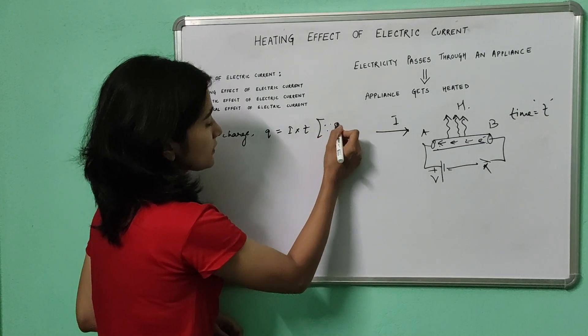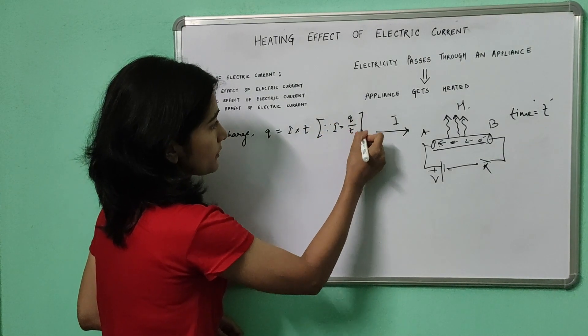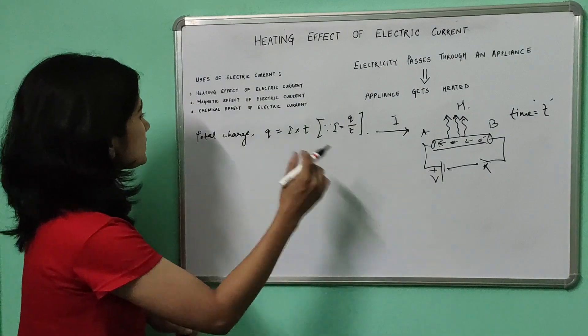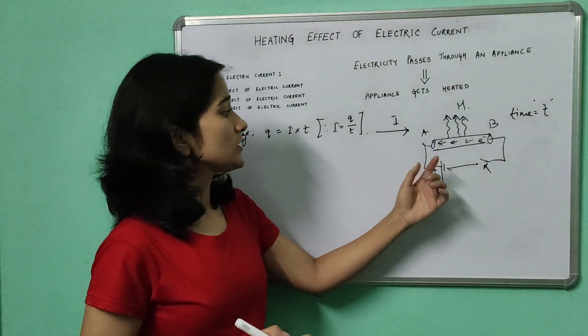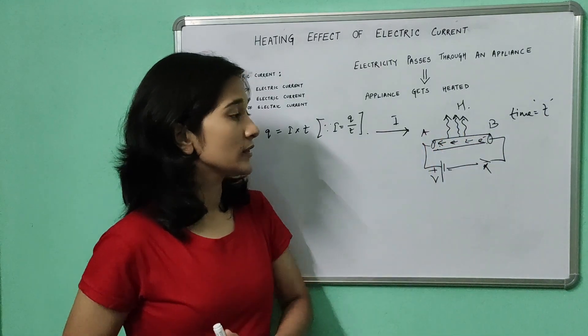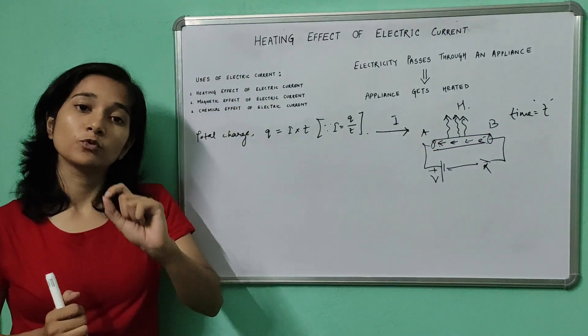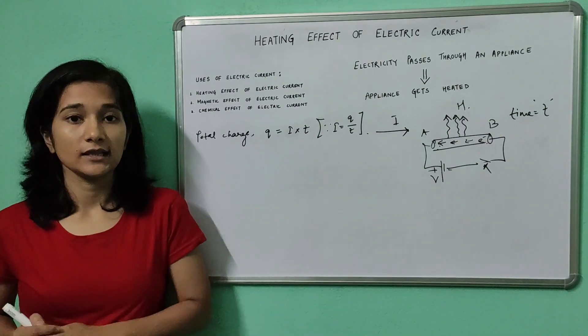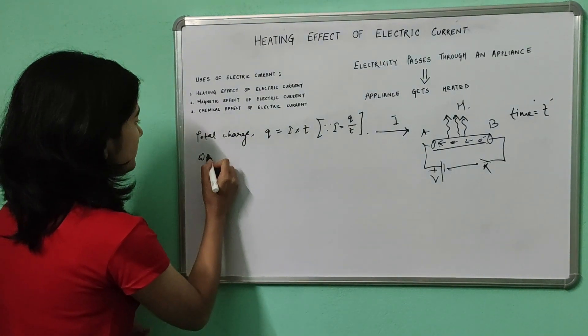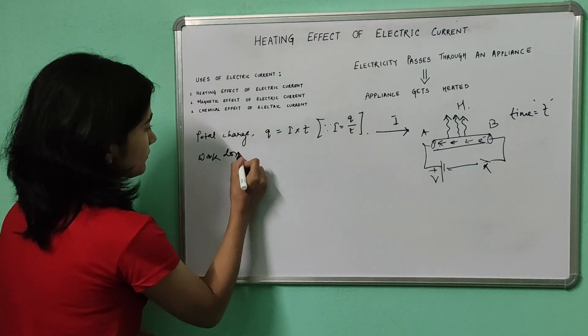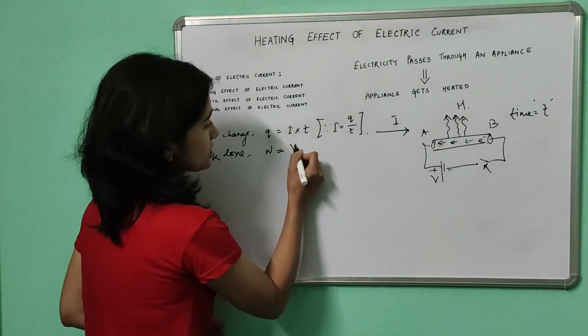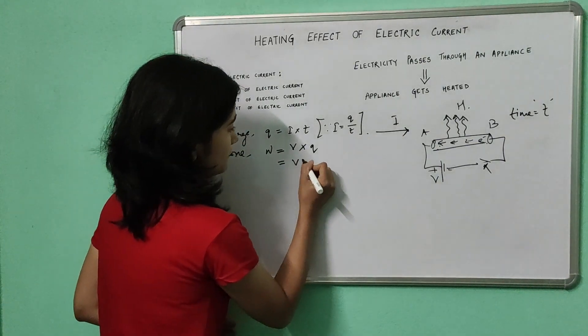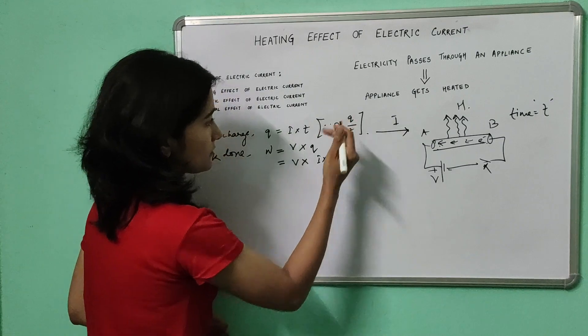Since we know that current is given by total charge per unit time, from that we can write q equals current into time. Now we know that when there is a potential difference between two points A and B, and you have to move a unit positive charge from one point to another, then some work must be done while doing that. That work done is given by the potential difference into the total amount of charge passing through the conductor: V into I into T from the previous expression.